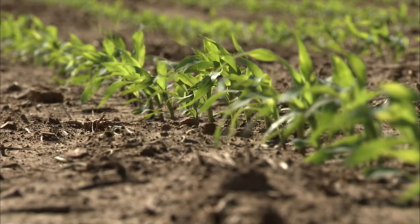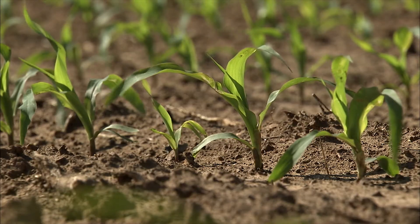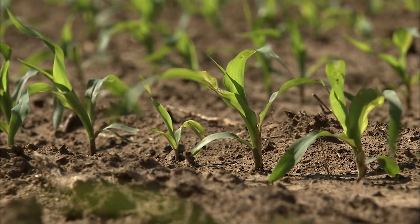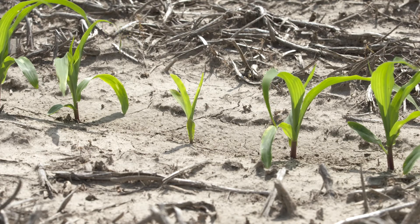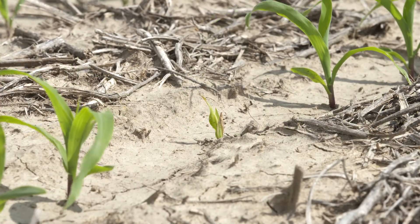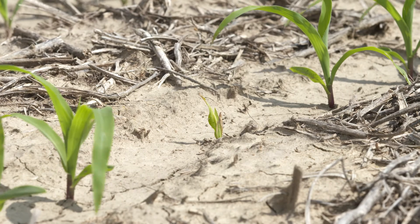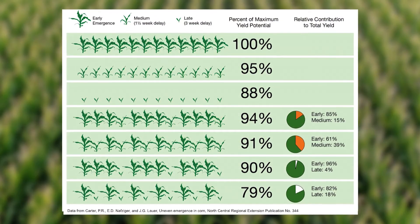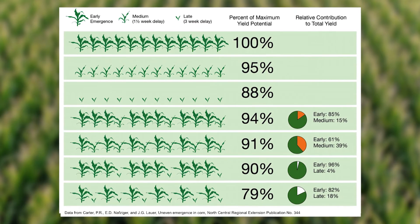Another factor to evaluate is stand uniformity. Uneven emergence timing leads to uneven plant sizes. Late emerging plants are at a competitive disadvantage with larger plants in the stand and will have reduced leaf area, biomass, and yield. Fields with large variations in plant size will yield less than an even stand with the same number of plants.